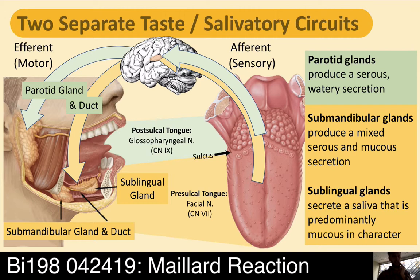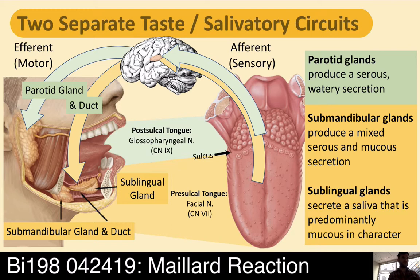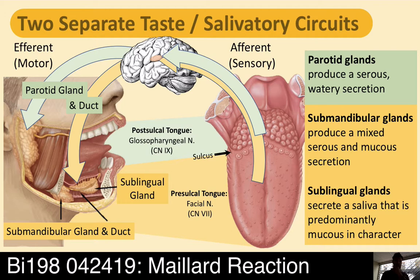The whole sense of taste has two separate, evolutionarily separate circuits. There's one on the pre-sulcal and post-sulcal tongue. If you've ever stuck your tongue way out and looked at it in the mirror, you'll notice there's this thing called the sulcus — a furrow along the back margin of your tongue. We have taste from both the front and the back, pre- and post-sulcal. They have two separate nerves that serve the front and the back of the tongue: the facial nerve and the glossopharyngeal nerve, which both ascend to the gustatory cortex. The cortex processes it and then sends efferent or motor signals down to the salivary glands, completing this circuit.